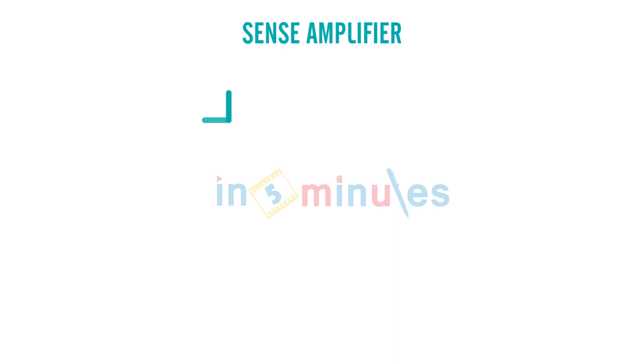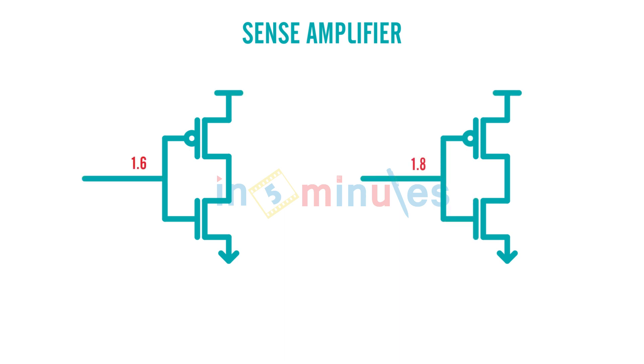Suppose I have two CMOS inverters—this is my CMOS inverter 1 and this is my CMOS inverter 2. Suppose input here was 1.6 and input here was 1.8, and this was nothing but my output capacitance.